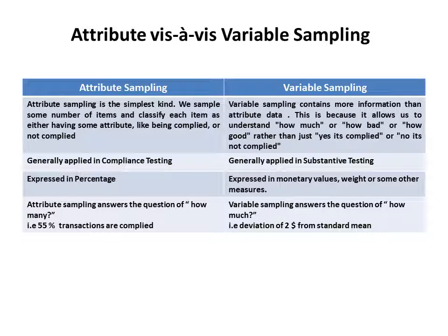Now let us discuss attribute and variable sampling. In attribute sampling, the answer can be either yes or no — either it has been complied or not complied; there cannot be any third answer. On the other hand, in variable sampling, it gives us more information than attribute data, because it allows us to understand how much, how bad, or how good, rather than just yes or no.